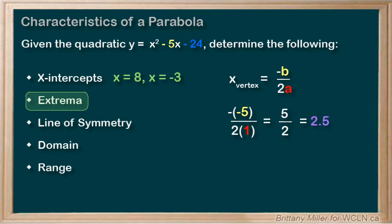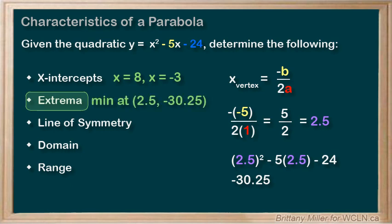We then need to plug that into our function to find the y value. 2.5² - 5 times 2.5 - 24 is equal to -30.25. We know this is a minimum because the a value of this quadratic is positive, so the quadratic opens upwards. So we have a minimum of y equals -30.25.